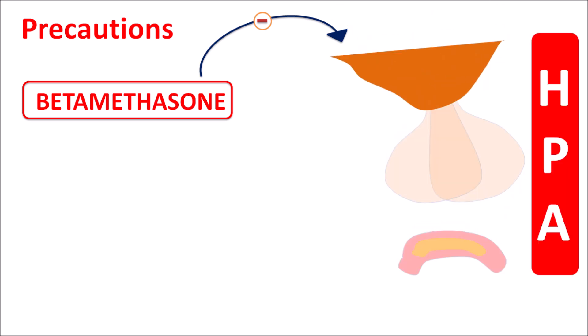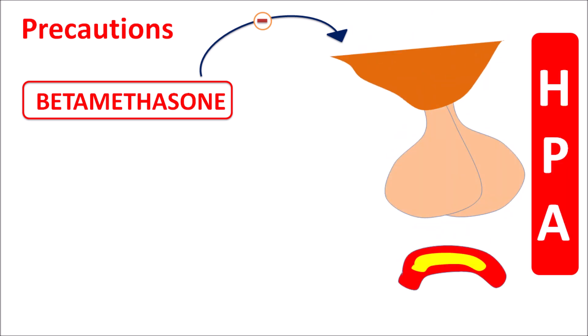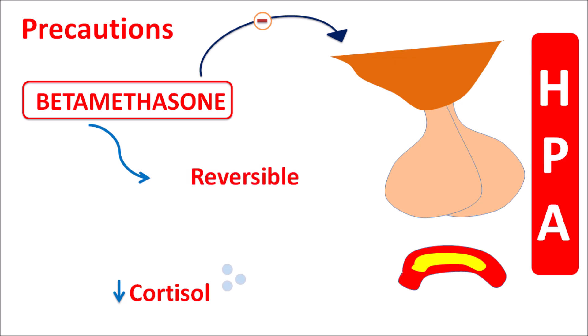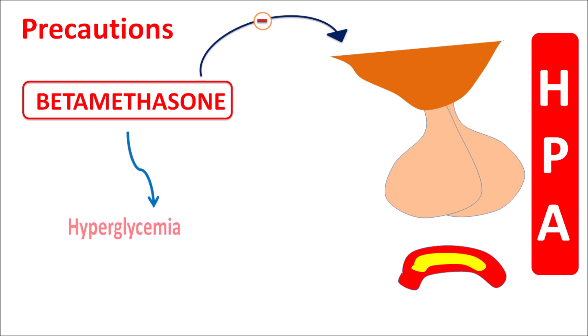This drug can suppress the HPA axis — the hypothalamus-pituitary-adrenal axis — which is responsible for cortisol release. When betamethasone inhibits this axis, cortisol release is inhibited, resulting in decreased cortisol levels and adrenal insufficiency. This can occur during treatment as well as after withdrawal. Although the adrenal insufficiency is somewhat reversible when the drug is stopped, the extent of suppression depends on dose and frequency. Higher doses and frequent administration can suppress the HPA axis, resulting in hyperglycemia and development of Cushing's syndrome.